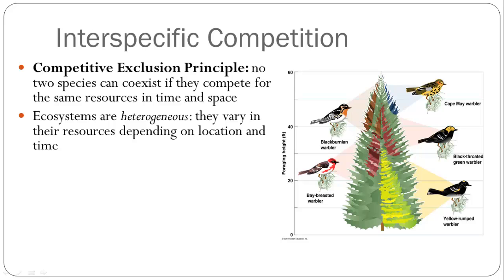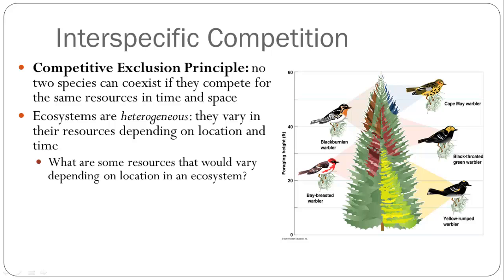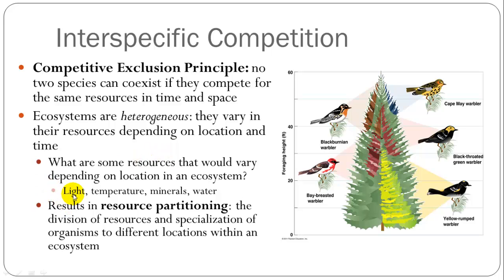Ecosystems are very heterogeneous — the resources within them are not all the same. These differences in resources allow different species to specialize on different things, such as availability of light, temperature, minerals, or water. This results in resource partitioning. A great example is different types of warblers that all live in the same tree but eat different insects or eat in different parts of the tree, partitioning resources in slightly different ways, which allows them to avoid competitive exclusion.